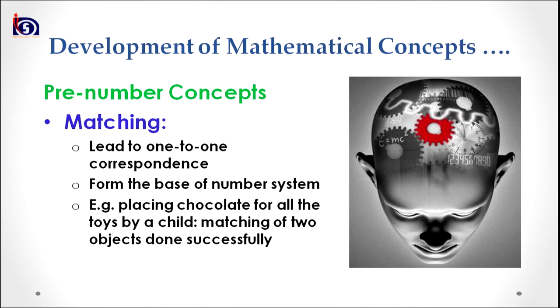How a child thinks about shapes, figures, and dimensions of different spaces and figures relates to spatial thinking. The first concept is the pre-number concept, in which there is a sub-concept called matching. Matching can be referred to as one-to-one correspondence — matching one kind of object with another. For example, if a child is asked to give chocolate to all the toys and places one in front of each toy correctly, it can be said that the child has matched the objects successfully. Therefore, matching forms the base of the number system, though it does not invariably include numbers.